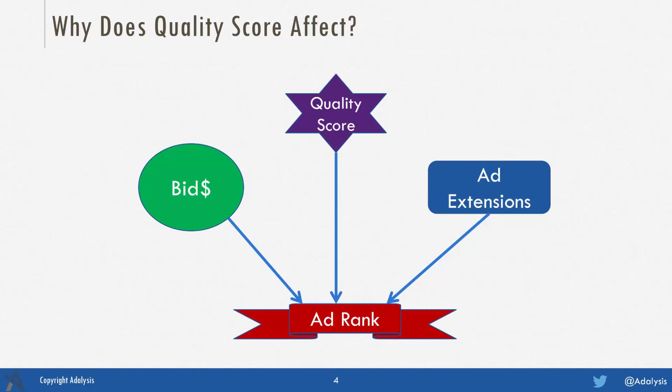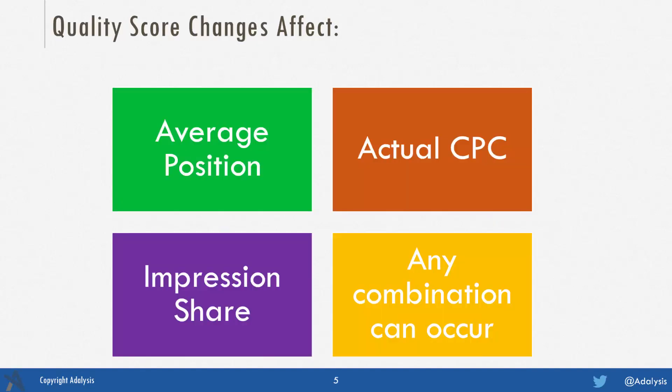Quality score plays a role in your account as part of ad rank. Your ad rank is comprised of your bid, your quality score, and your ad extensions. When your ad rank changes, this can affect your average position, your actual cost per click, your impression share, and any combination of the three.